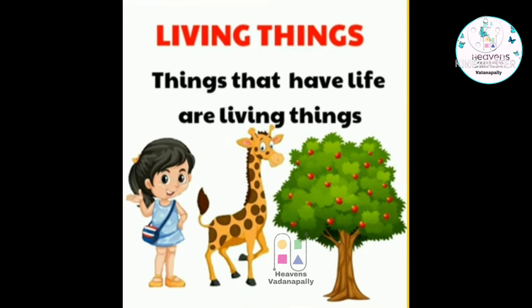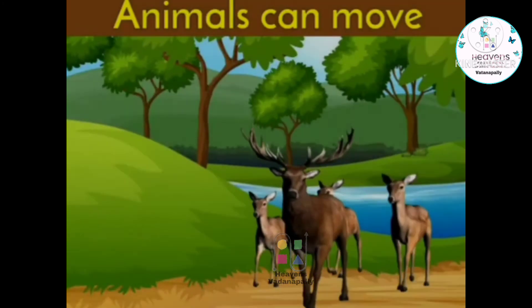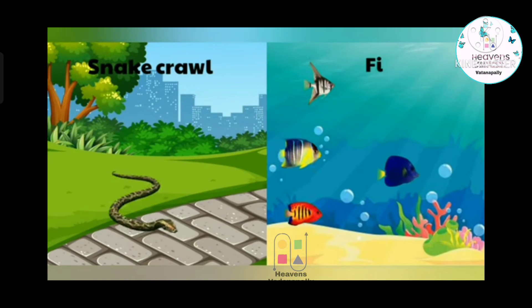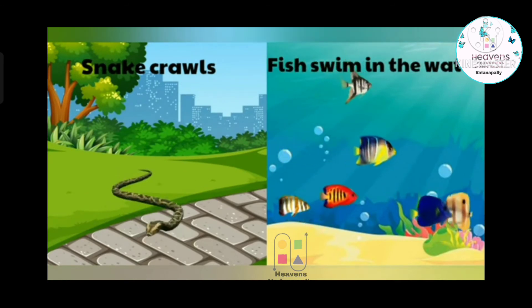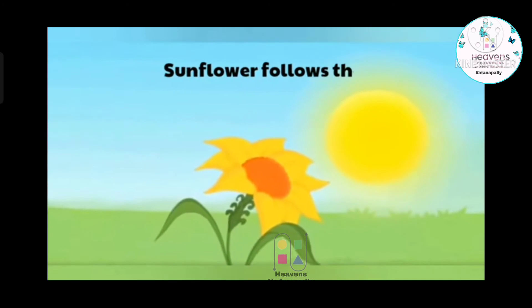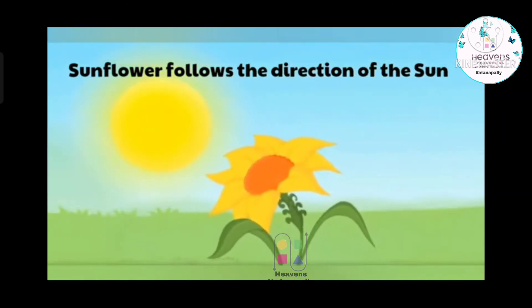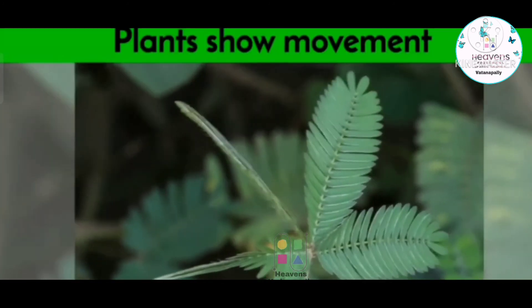First of all, living things can move. All animals, plants, birds, and human beings move with their legs. They run, they walk, they jump. Snakes crawl, fishes swim in water. And plants, they move towards the direction of the sun. Touch-me-nots close their leaves when touched.